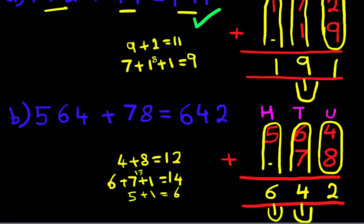Let's read out the question and the answer. So 564 plus 78 is 642. That is correct.